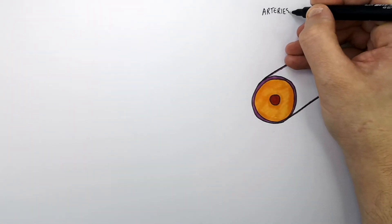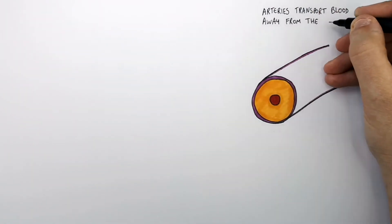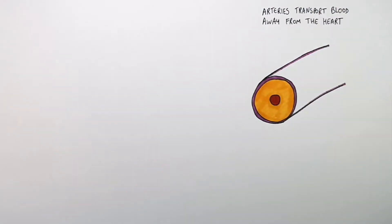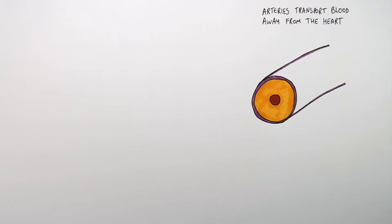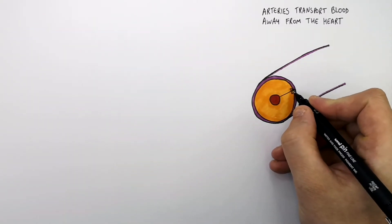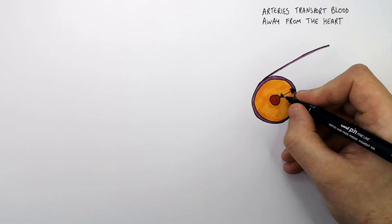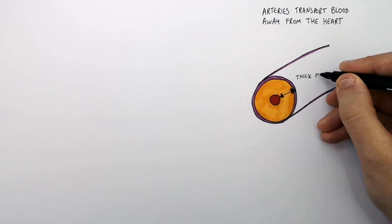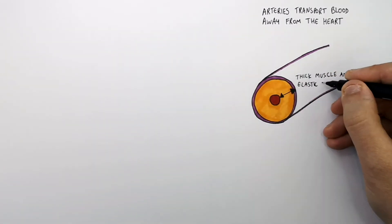Arteries transport blood away from the heart. Blood is pumped out of the heart at very high pressure. These are the adaptations of the artery so it can withstand the high pressure in which blood is pumped through them. As you can see, it's got a very thick muscle and elastic layer.